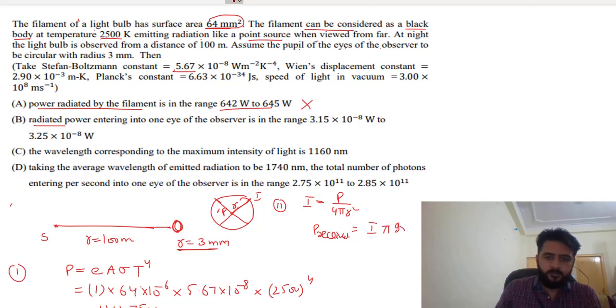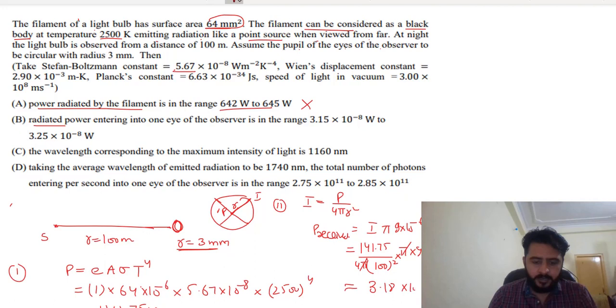Power in is 2.9×10⁻⁶. Intensity is equal to power upon 4πr². Power is 141.75 and 4πr, r is 100 squared, times π times 9×10⁻⁶. On solving, π cancels. After solving this, I will get 3.18×10⁻¹⁰. If we check, the answer comes between 3.15 and 3.25, so this is correct.